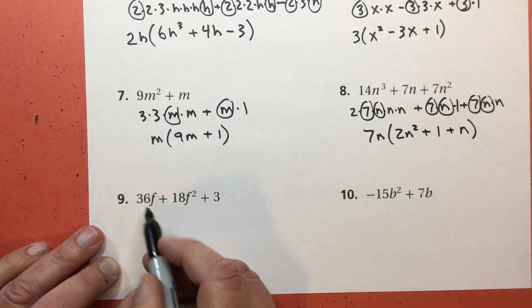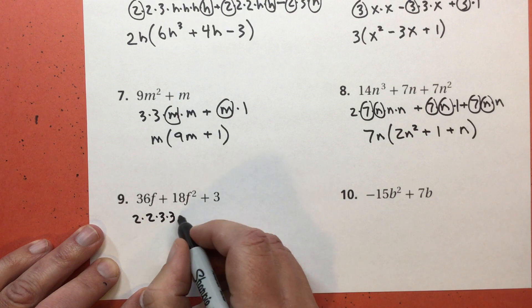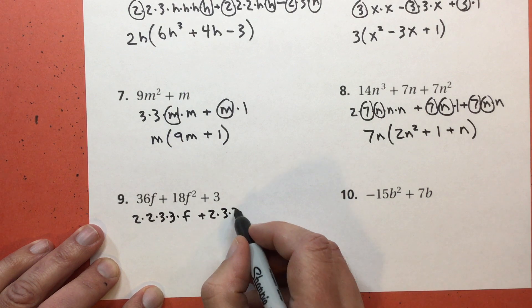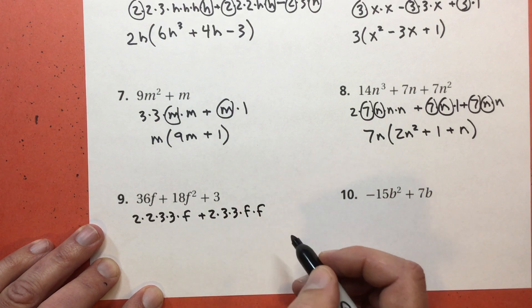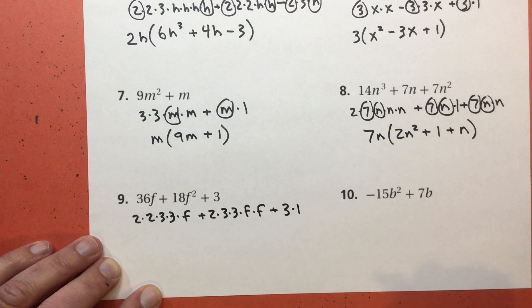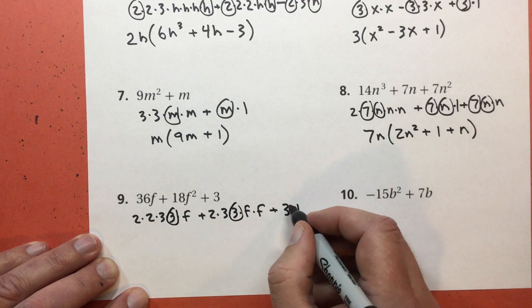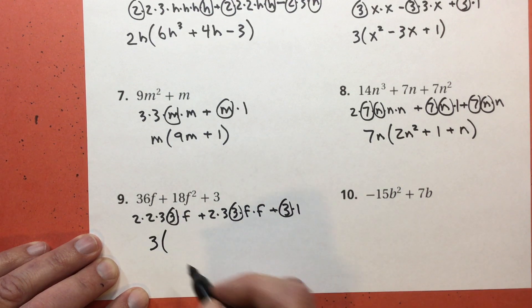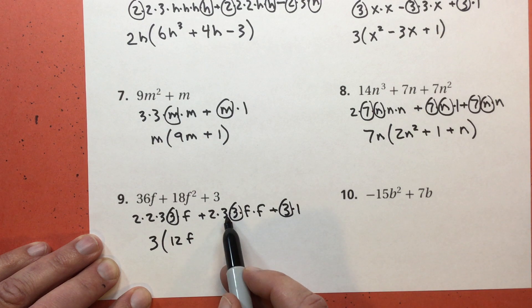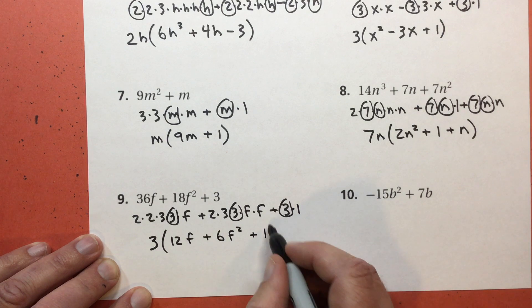All right. 36 is 2 times 18, which is 2 times 9, which is 3 times 3 times F. And 3, I see a 3 here, a 3 here, and a 3 here. I think I'm going to take a 3 out, so I'm going to put times 1 there. And actually, that's the only thing that I have. 3 times 3. I'm sorry, 3, 3, and 3. So my greatest common factor is 3. 2 times 2 times 3, that's 12F. 2 times 3 times F times F is 6F to the second power. And of course, got to leave that 1.